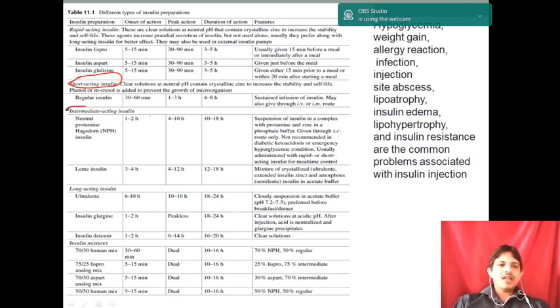Next is intermediate acting insulin, that is Neutral Protamine Hagedorn, NPH. The onset of action is 1 to 2 hours, peak action is 4 to 10 hours, and duration of action is 10 to 18 hours.